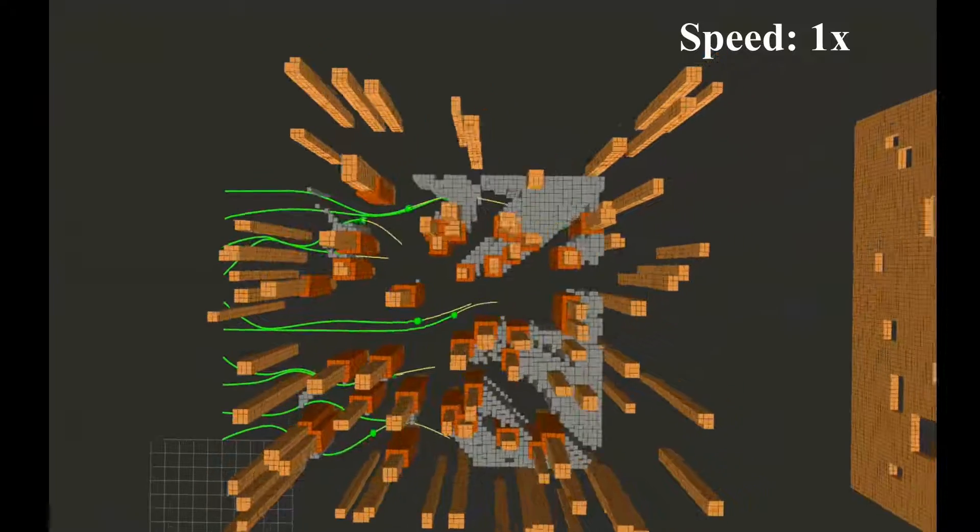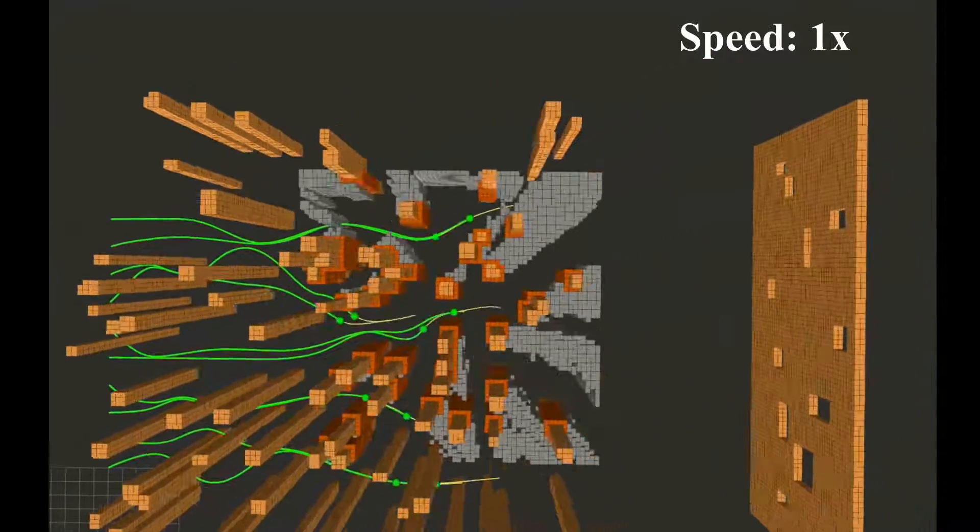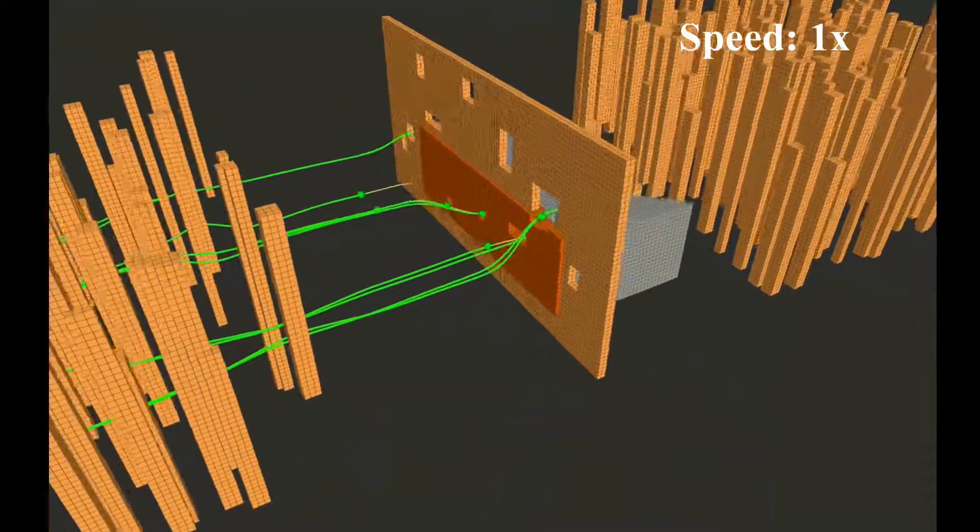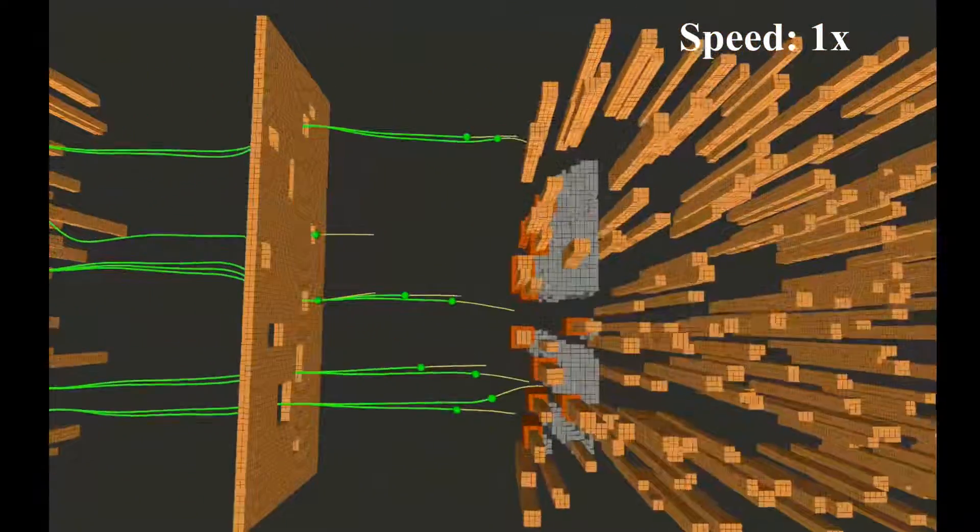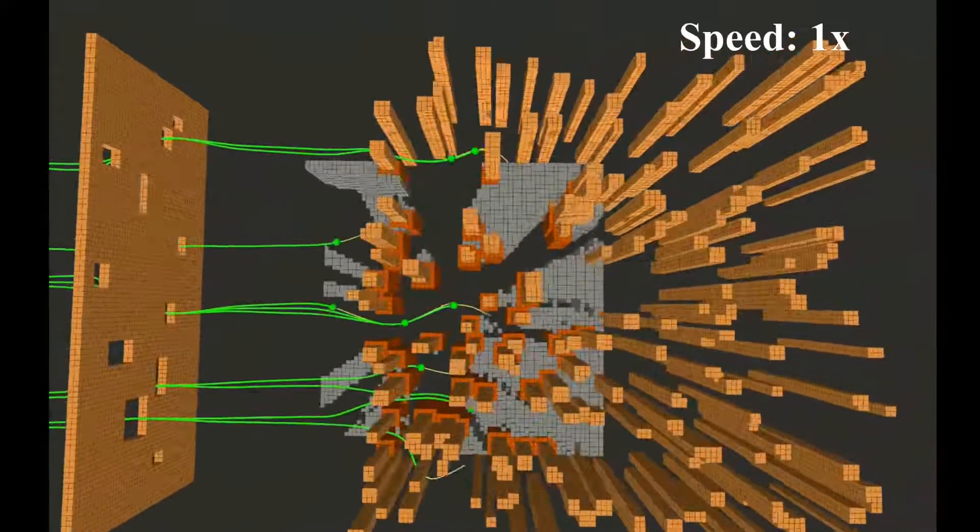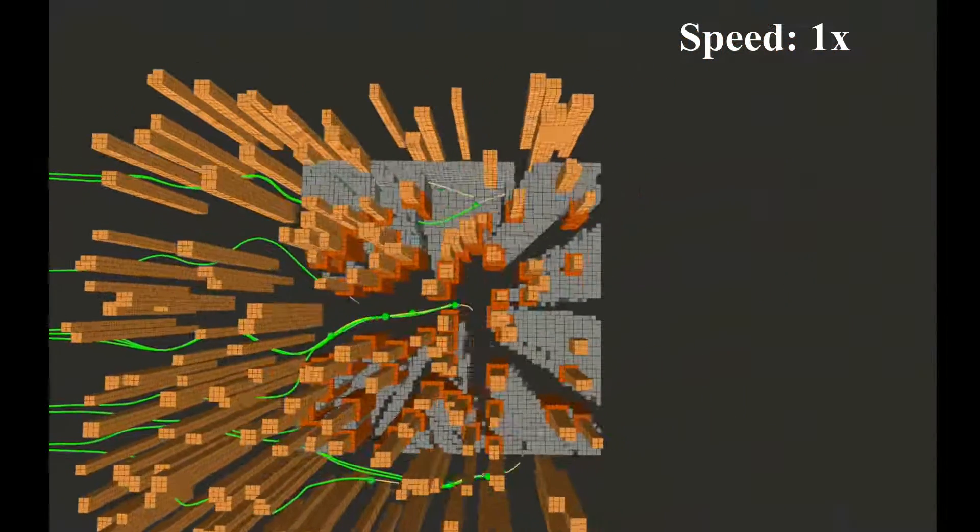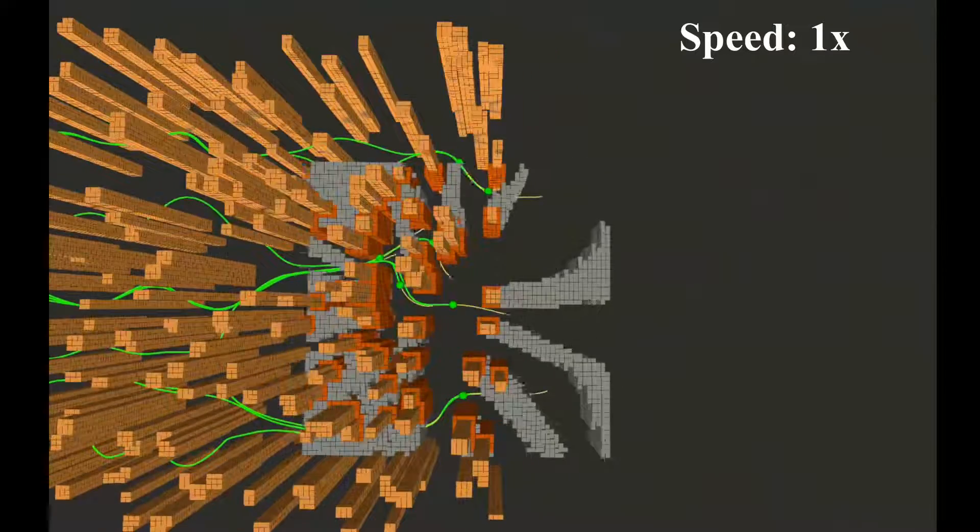We repeat our experiment, but no prior knowledge of the environment is given to the drones this time. The drone's average speed is 9% lower than in the previous simulation due to no prior knowledge of the environment. However, it is still 67% higher than the average speed of the best state-of-the-art planner.